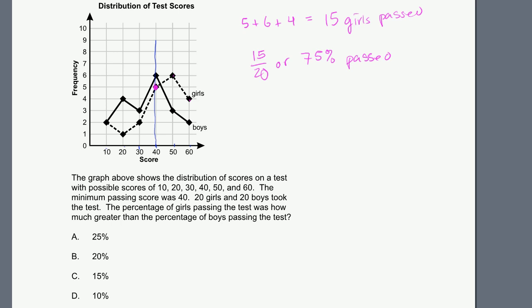Now let's do the boys. And I'll do it in stereotypical colors. The boys in blue. They have to get at least a 40 to pass. So 6 boys just barely passed, got the 40. Then 3 boys got a 50. They passed. Plus 2 boys got a 60. They passed. So a total of 6 plus 3 plus 2 is 11 boys passed. 11 out of 20 is the same thing as 55%.